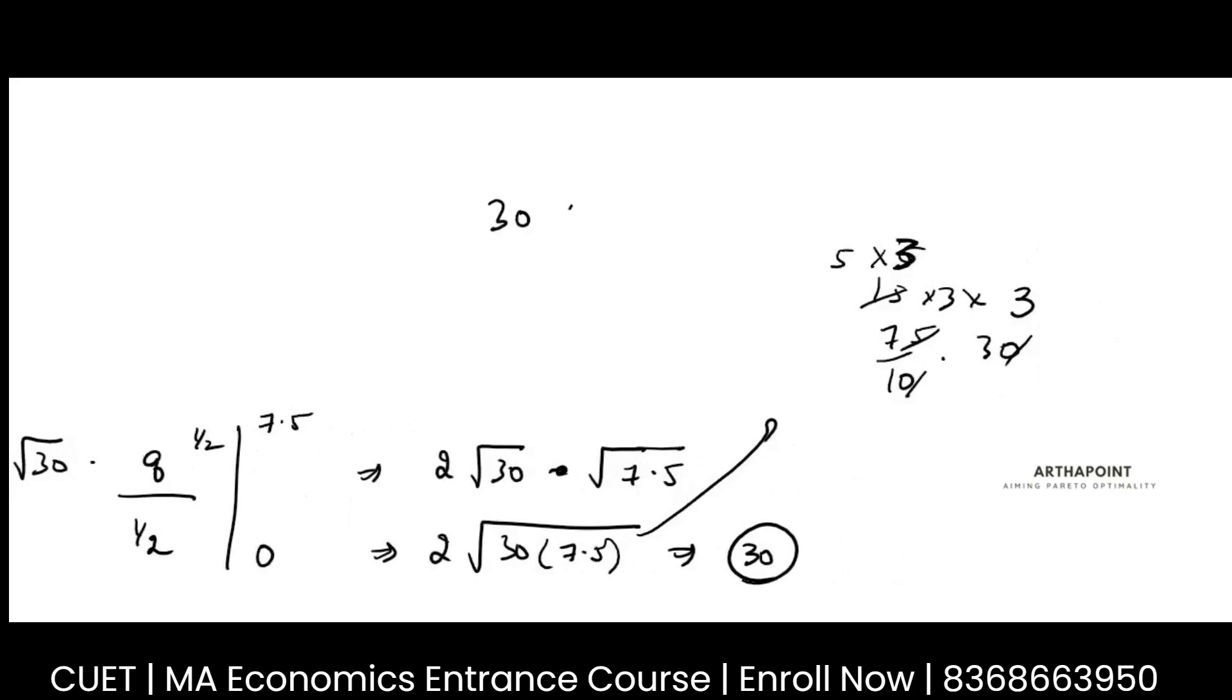So this will be 30 into 75 by 10. So this is 15 into 5 into 3. So this will be 5 into 3 into 5 into 3. So this is root 15. So 15 into 2 is 30.